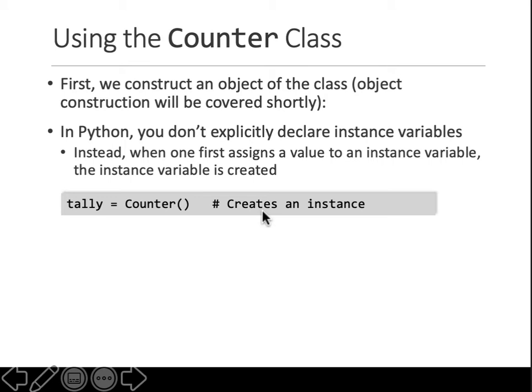Coming back to our students and class example — we have defined a class in which students can exist with certain properties and perform certain functions. When student A is created, student A is an instance of the class. When students B, C, and D get created, those are new instances of the same class.